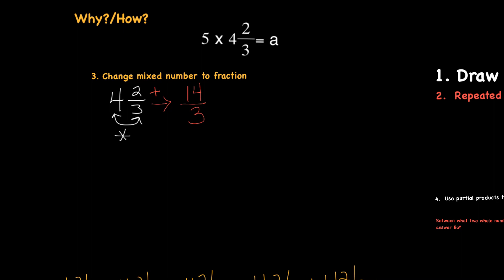So we have turned 4 and 2 thirds into just a plain fraction. And then what we will do is we will actually multiply the 5 times the 14 thirds. So we're basically doing 5 times 14 as our numerator over 3, which when we multiply that out gives us 70 over 3. And then if we divide 3 into 70, we're going to end up with 23 and 1 third as our final answer.